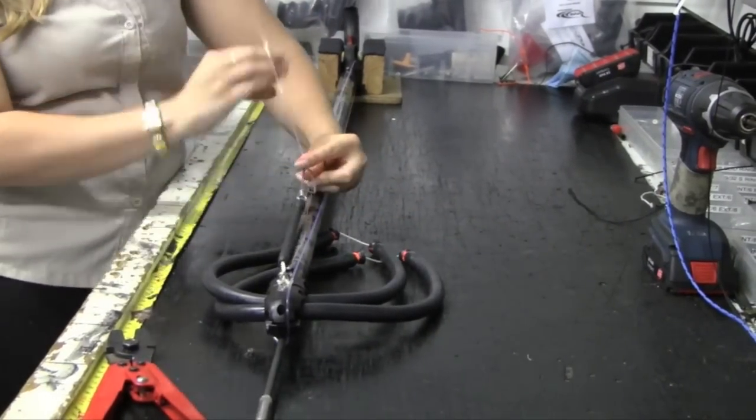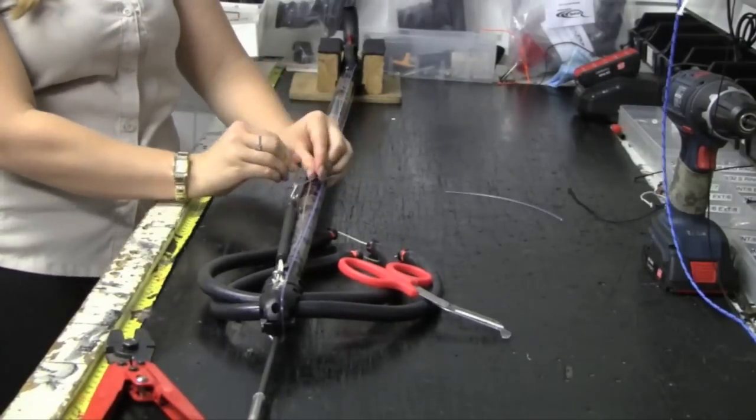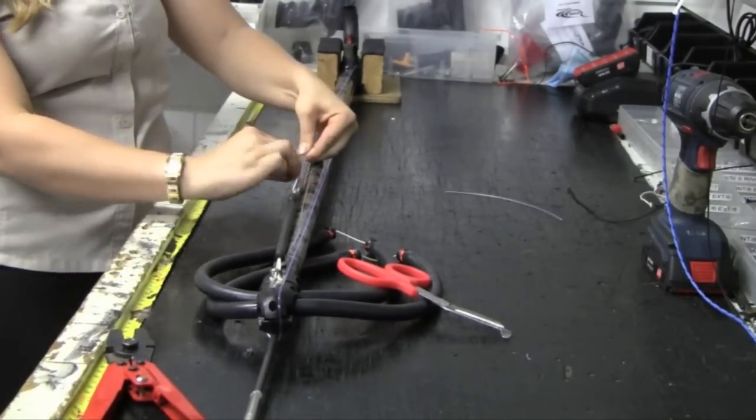Repeat this process at the other end of the gun, attaching the mono to the bungee. Pull the bungee to the desired tightness before you crimp.